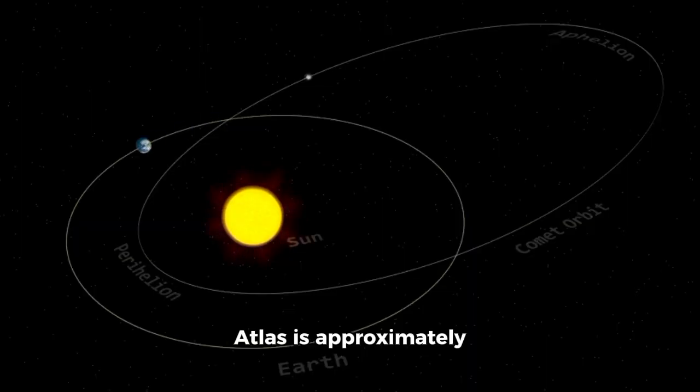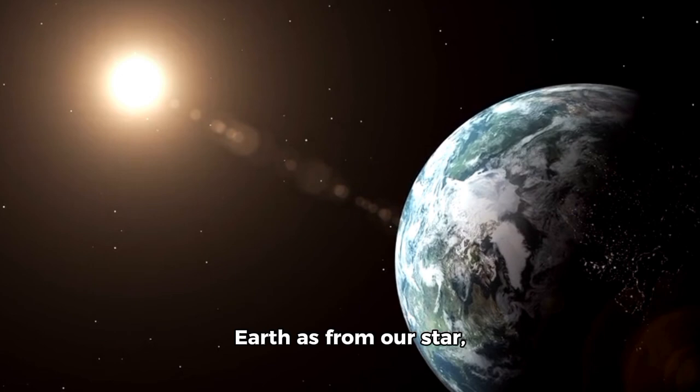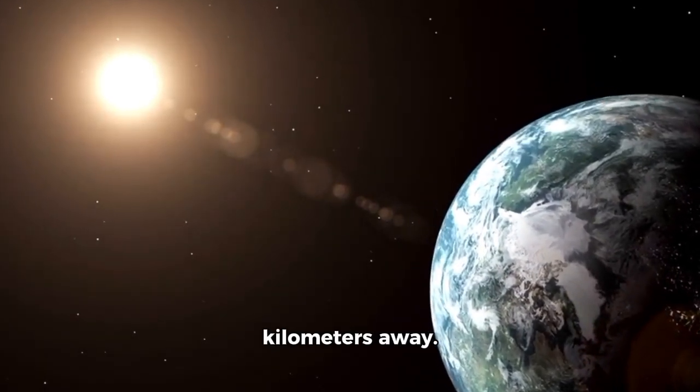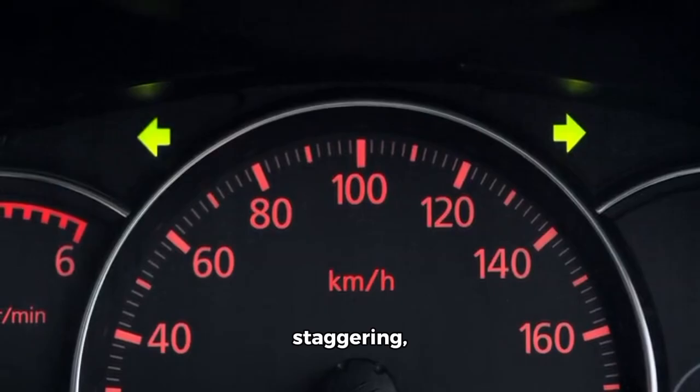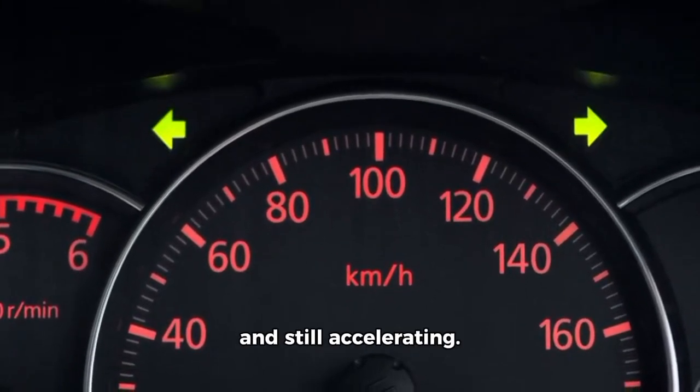At this moment, Atlas is approximately two astronomical units from the sun. That's twice as far from Earth as from our star, or about 300 million kilometers away. Its velocity is staggering, currently traveling at nearly 60 kilometers per second and still accelerating.